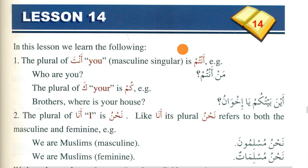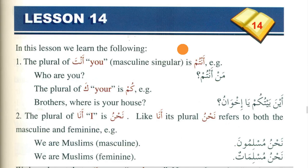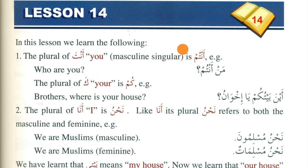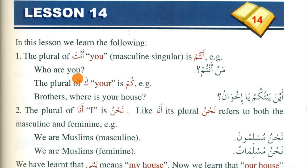Last time we completed lesson 13, now we start lesson 14 inshallah. In this lesson you will learn the plural of these pronouns. The plural of 'anta' is 'antum', and the plural of 'ka' is 'kum'. You have already learned 'anta' and 'ka', now you are studying their plural as well. You need to memorize it. Similarly, the plural of 'ana' is 'nahnu'.